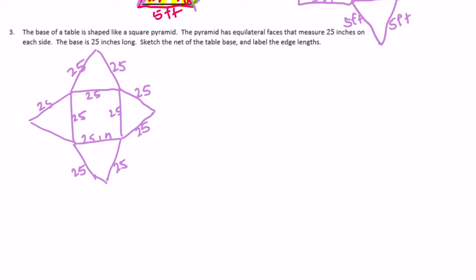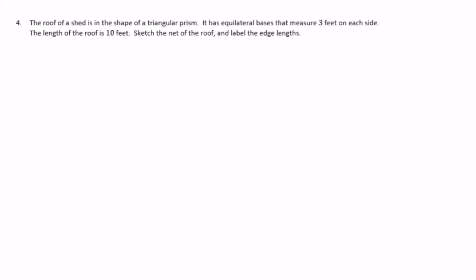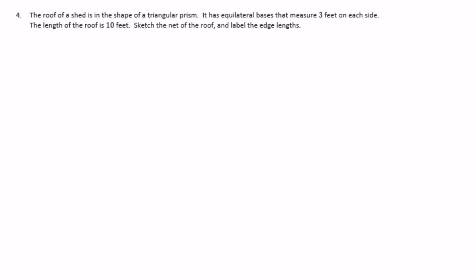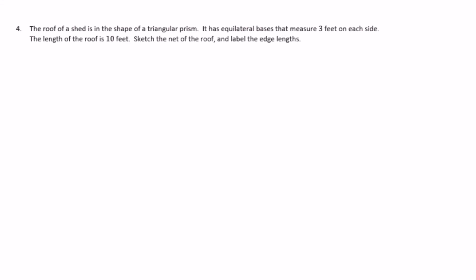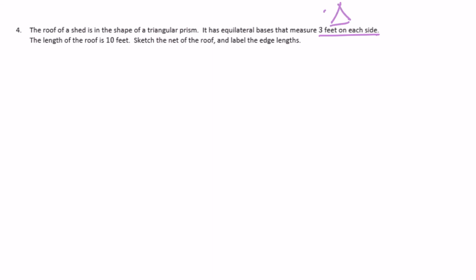There are multiple nets you could create — this is just the one that came to mind for me. Number four: the roof of a shed is in the shape of a triangular prism, meaning it has two triangle bases, whereas the pyramid only had one base. The equilateral bases measure three feet on each side, and the length of the roof is 10 feet.